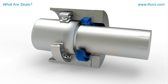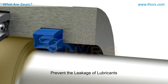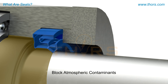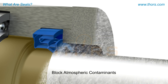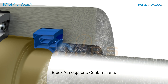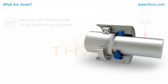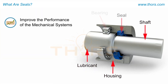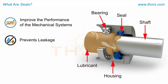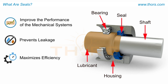Seals are components that confine and prevent the leakage of lubricants from mechanical systems and block atmospheric contaminants from entering the moving parts of the system during its operation. Seals improve the performance of the mechanical systems where they are used by preventing leakage and maximizing the efficiency of lubrication.